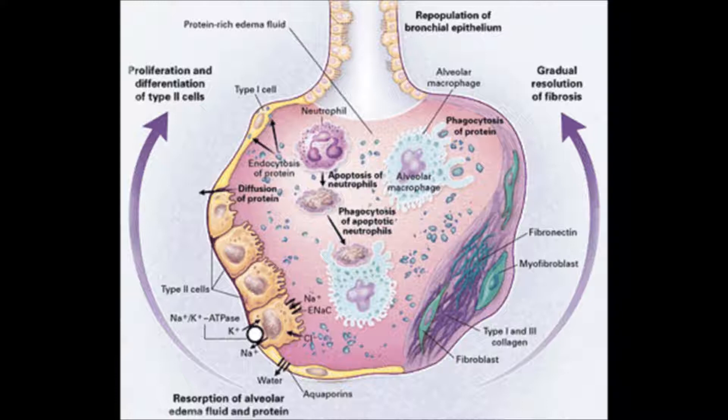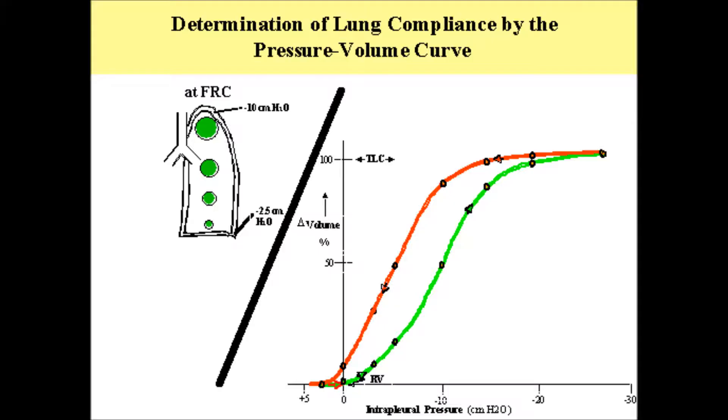The answer is A. Tachypnea, tachycardia, and hypertension can all be signs a patient is going into ARDS. But the cardinal sign is decreasing PO2 when the FiO2 is increasing. Hypoventilation and coma are very late signs, and peak airway pressure will increase.